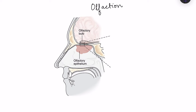Olfaction is brought about by receptors present in the olfactory epithelium, which is located at the roof of the nasal cavity and has a surface area of approximately 10 centimeter square. Since it is present at the roof, the odorants — the chemicals present in the air — need to be sniffed to reach this olfactory epithelium.